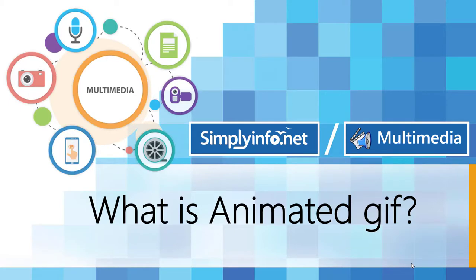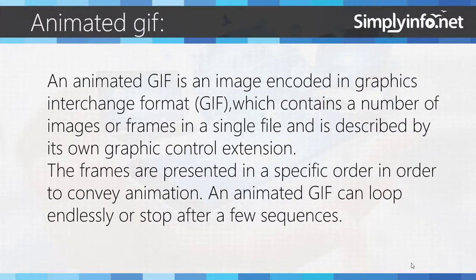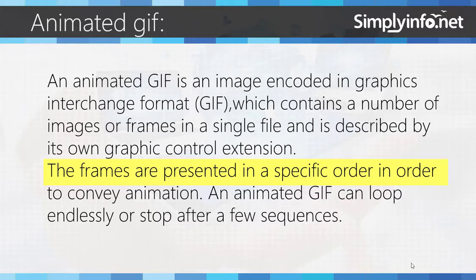What is Animated GIF? An Animated GIF is an image encoded in Graphics Interchange Format, which contains a number of images or frames in a single file and is described by its own graphic control extension. The frames are presented in a specific order in order to convey animation. An Animated GIF can loop endlessly or stop after a few sequences.